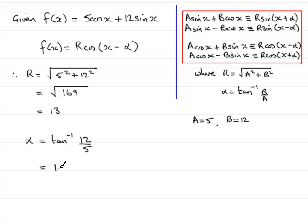So that is 1.1760... radians, and we've been asked to give our answer for α to 3 decimal places, so it's going to be 1.176 radians.